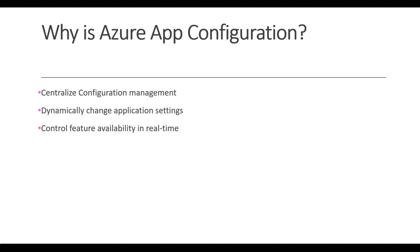We're going to start by creating a new Azure App Configuration resource in the Azure portal. Then we're going to edit a simple ASP.NET Core web app to consume the Azure App Configuration and to show and hide a feature using Azure App Configuration.